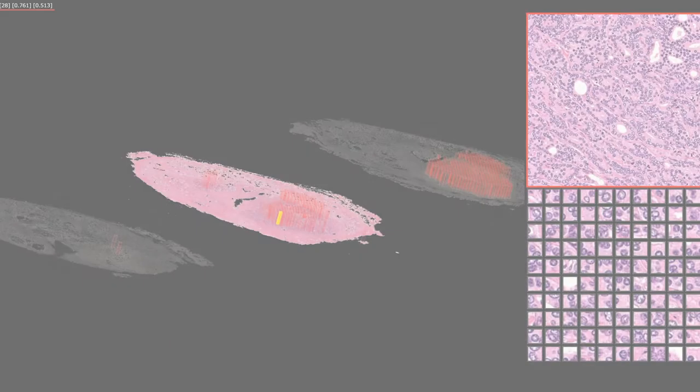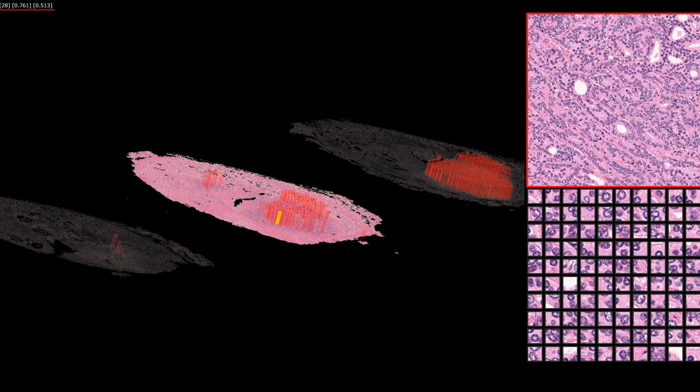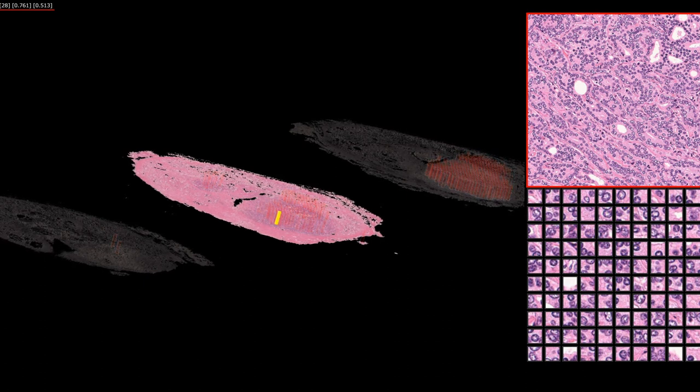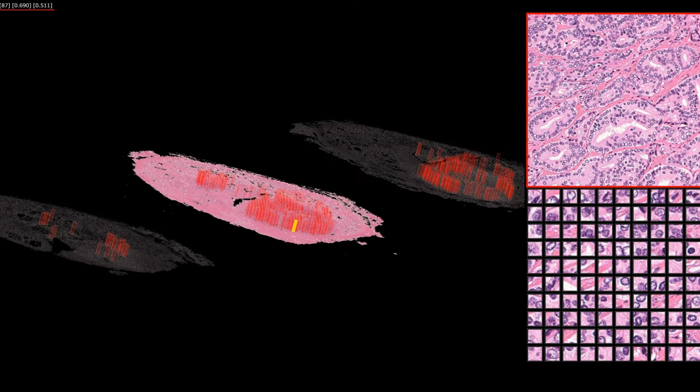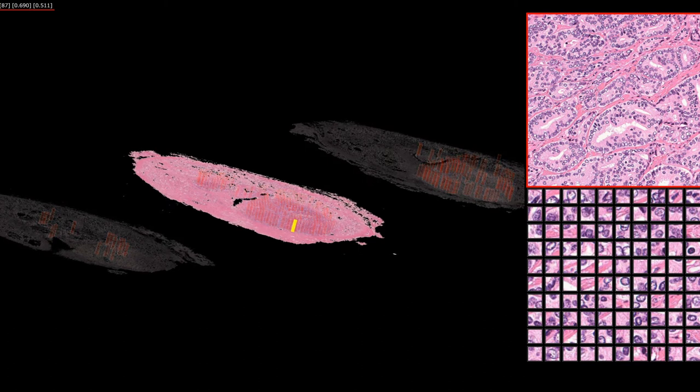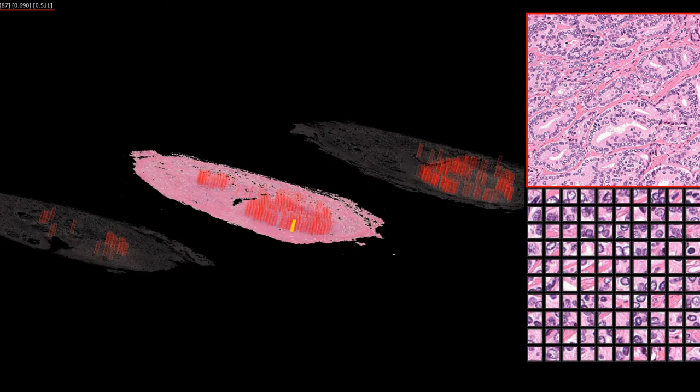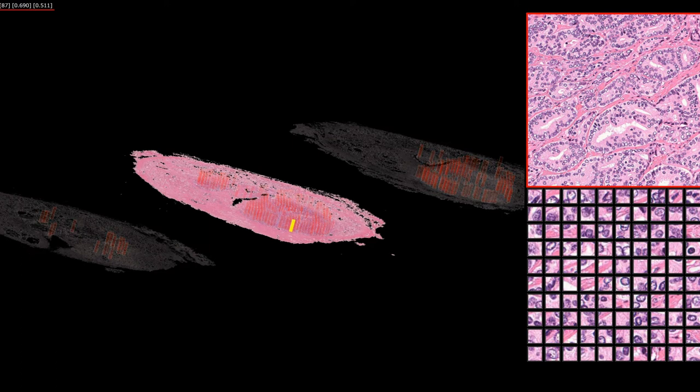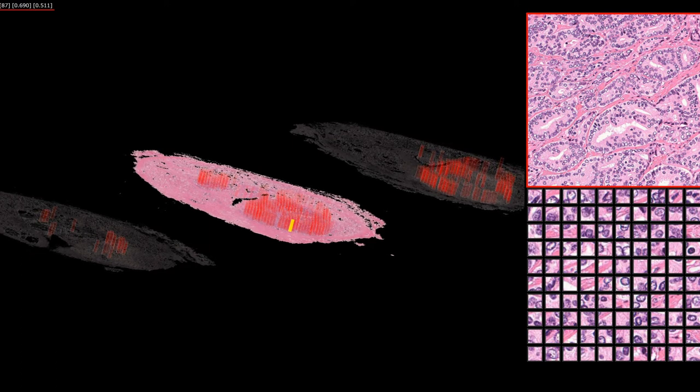But this particular system goes one step further. Baked into the system's code is a way for it to tell users what image features correlate positively or negatively with reoccurrence. And that's crucial because those features, as the team found, aren't always textbook. Signs of reoccurrence were often found lurking outside of the cancerous regions pathologists are taught to focus on.